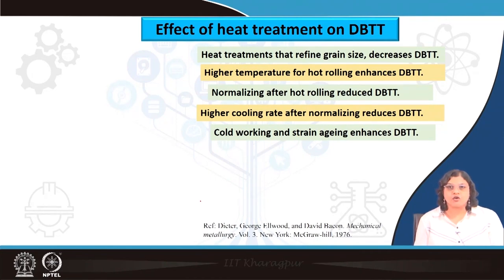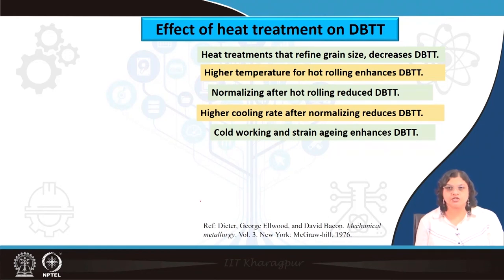On the other hand, if we are cold working — applying deformation at a lower temperature — that can have a negative influence and can lead to enhancement in the DBTT. Similarly, strain aging or any kind of aging treatment typically leads to an enhancement in grain size, and once the grain size is increased, that can increase the ductile to brittle transition temperature as well. So we have to be careful while pursuing these different heat treatments.